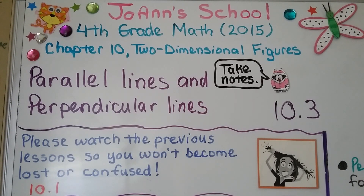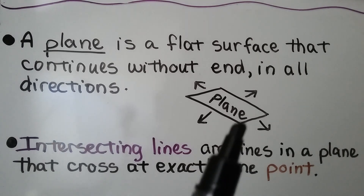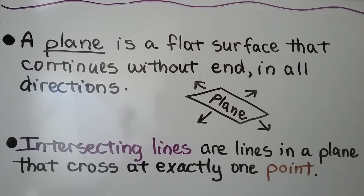Lesson 10.3: parallel lines and perpendicular lines. Lesson 10.1 is helpful if you haven't seen it — it's linked in the description. A plane is a flat surface that continues without end in all directions. Intersecting lines are lines in a plane that cross at exactly one point.